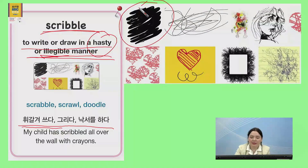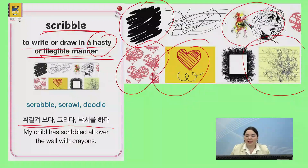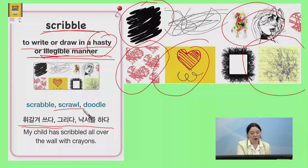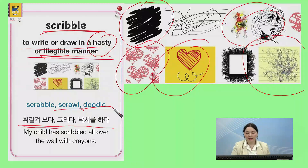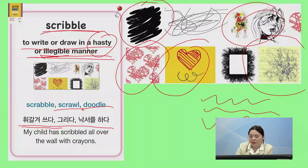So, someone scribbled here. They scribbled these hearts. They scribbled on paper. They made this drawing out of scribbles. Scribble이랑 비슷한 말은 scrawl 또는 doodle. Scrawl is to quickly write — I'm scrawling across this board. Doodle is to quickly draw — I might doodle a face on the board.